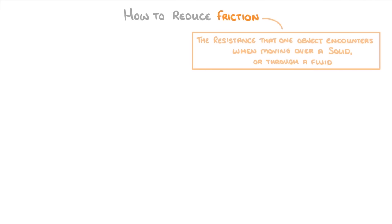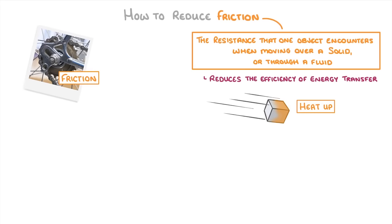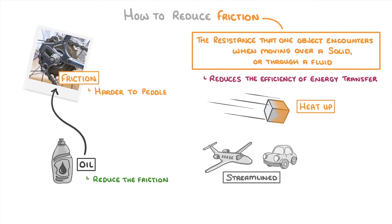The last thing we need to look at is how to reduce friction, which is the resistance that an object encounters when moving over a solid or through a fluid. The problem with friction is that it reduces the efficiency of energy transfer and can cause objects to heat up. For example, the friction between the cogs and chain of a bicycle makes it harder to pedal, but by adding oil, which is a type of lubricant, we can reduce that friction and make cycling easier. Meanwhile, making cars and planes streamlined reduces the friction from air resistance, which allows them to use less fuel and makes them more efficient.